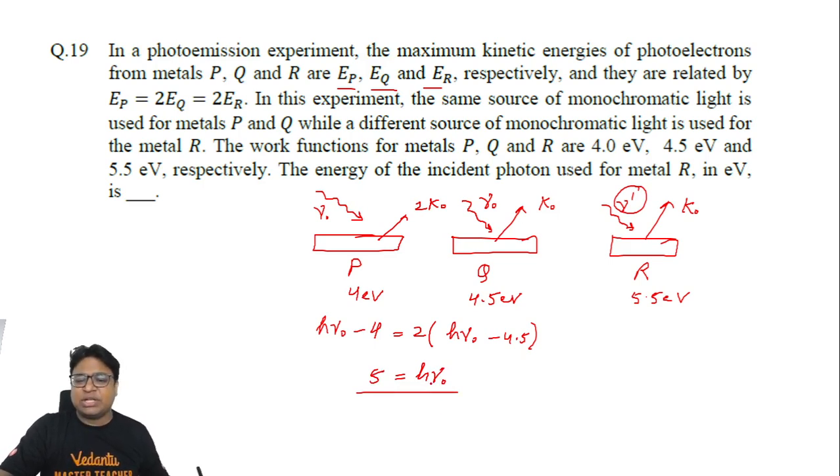Using this, we can calculate the value of K₀ also. For example, if I put this hν₀ in this part which represents K₀, then I get the value of K₀ as 0.5 electron volt.